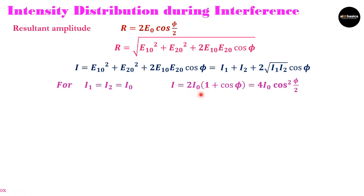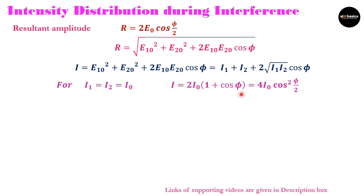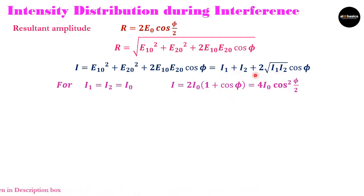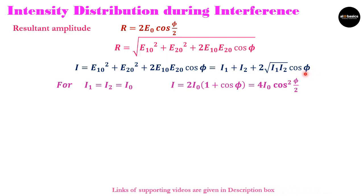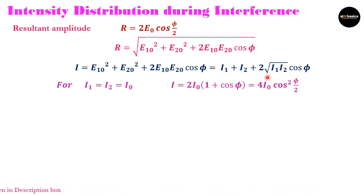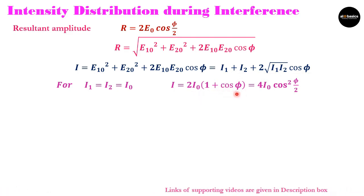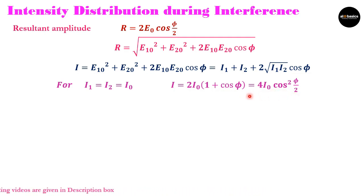For the special case where I1 = I2 = I0, we get I = 2I0(1 + cos φ). Substituting I0 for each term, we get 2I0 from the first two terms and 2I0 from the cross term, giving 2I0(1 + cos φ). Using 1 + cos φ = 2cos²(φ/2), this becomes I = 4I0 cos²(φ/2), consistent with the earlier expression.